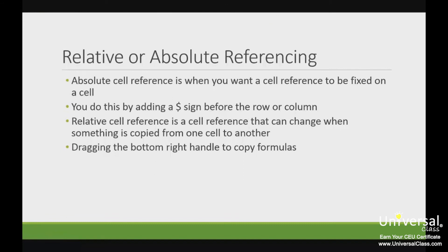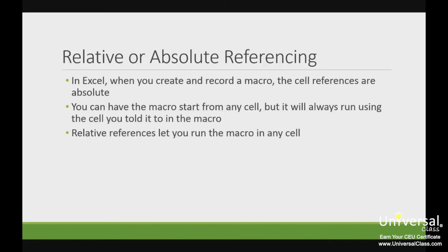An absolute cell reference in Excel is where you want a cell reference to be fixed on a cell. You can mark rows and columns as absolute by adding the dollar sign before the row, column, or both when working with formulas. A relative cell reference is a cell reference that can change when a formula is copied from one cell to another. In Excel 2013, whenever you create and record a macro, the cell references are automatically absolute. If you create a macro that starts in A1, it will always start in cell A1 regardless of which cell is active when you run the macro.